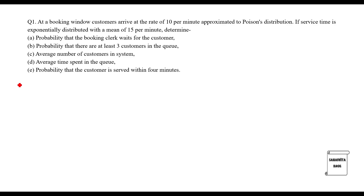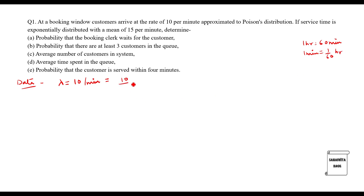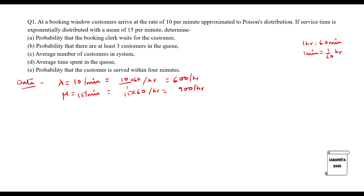First we write down the given data. Lambda is 10 per minute. Converting to per hour: one hour has 60 minutes, so lambda becomes 10 divided by (1/60), which gives 600 per hour. The next data given is mu = 15 per minute. Converting to per hour: 15 multiplied by 60 gives mu = 900 per hour.